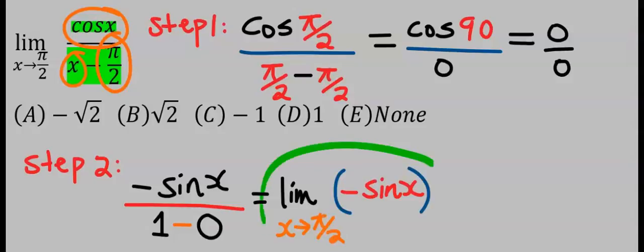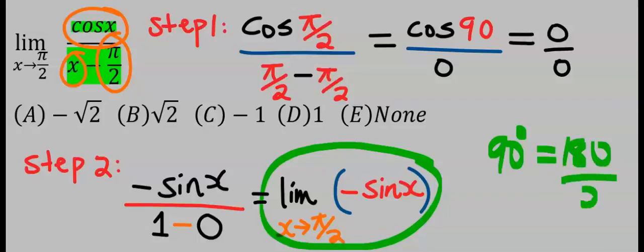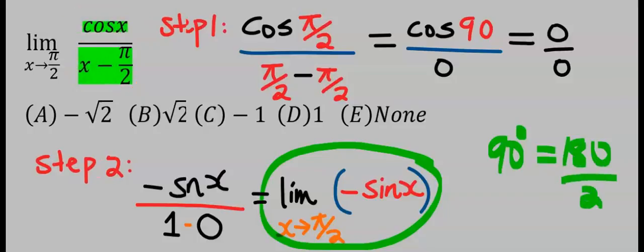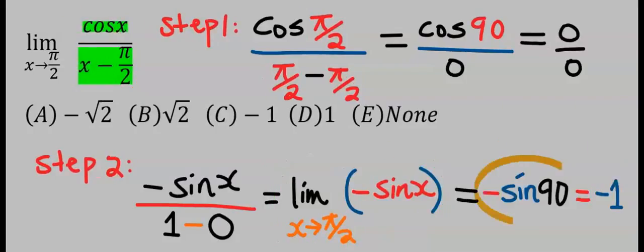Next we take the limit as x tends to π over 2, and π over 2 is the same thing as 90 degrees, which is 180 over 2. And minus sine 90 is minus 1, because sine 90 degrees is 1. And from the options, our answer is C.